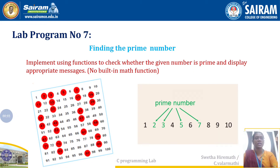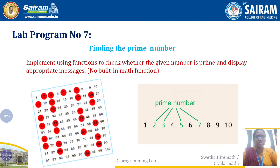Hi students, today in this video we are going to see about the 7th lab program of C programming laboratory. The title of the program is finding prime numbers. The question is: implement using functions to check whether the given number is prime and display appropriate messages, with no built-in math functions. We are going to implement a user-defined function to check whether a number is prime or not.